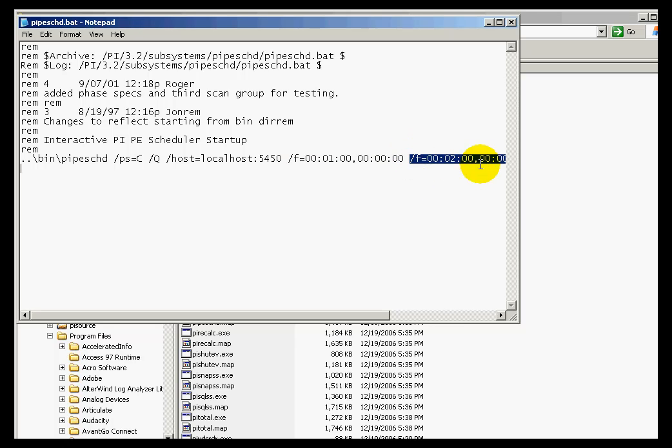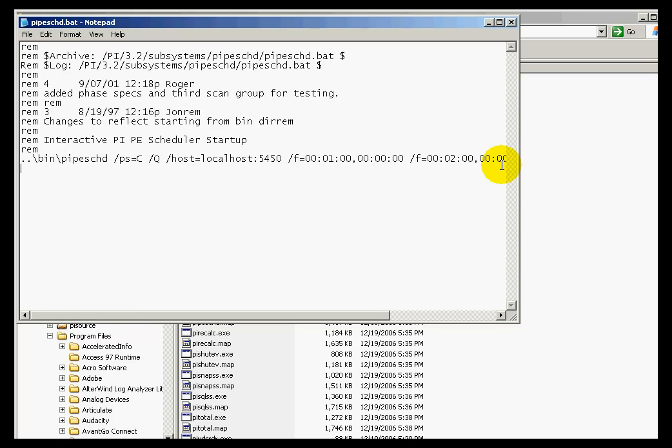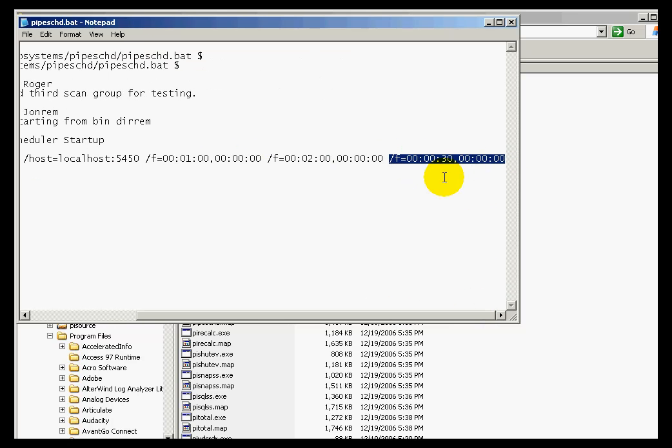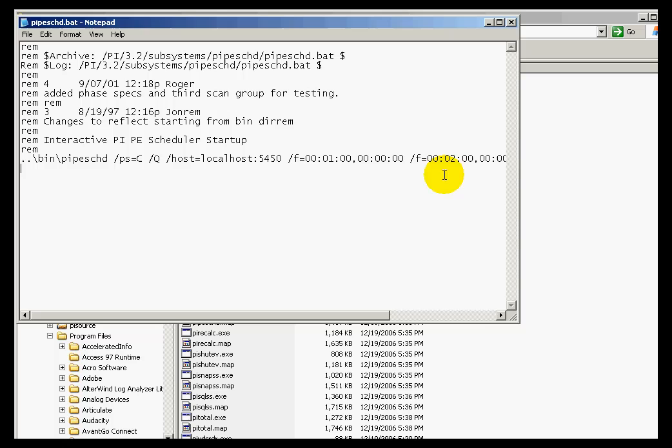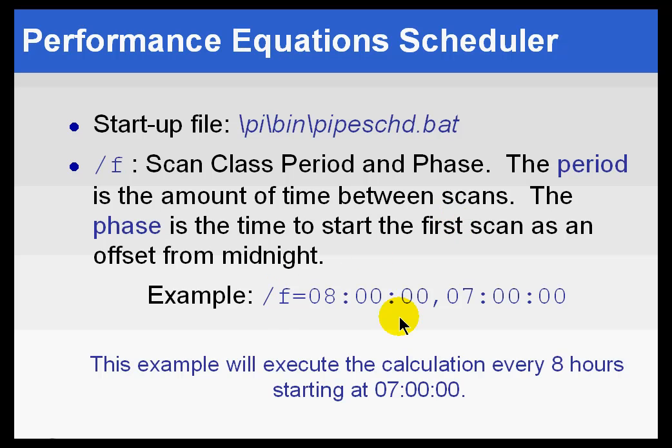This is a one-minute scan class, a two-minute scan class. And in this case, that last one was a thirty-second scan class. So as you can see, it looks a lot like a regular interface. In fact, the scan classes are exactly the same. For example, this would do an eight-hour period with a seven-hour offset.